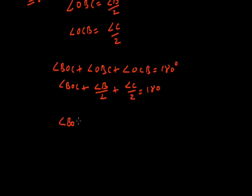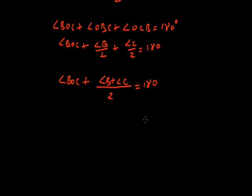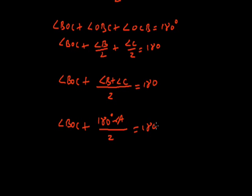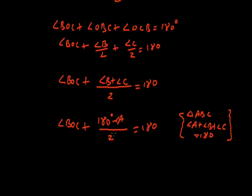Angle BOC plus (angle B plus angle C) divided by 2 equals 180 degrees. Angle B plus C can be written as 180 degrees minus angle A, because in triangle ABC the sum of all interior angles equals 180 degrees, so B plus C equals 180 minus A.